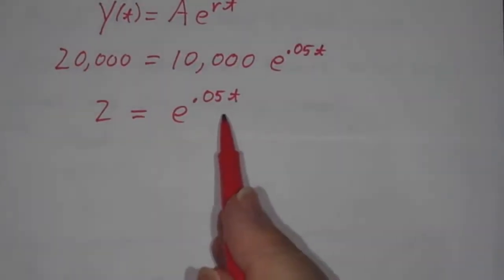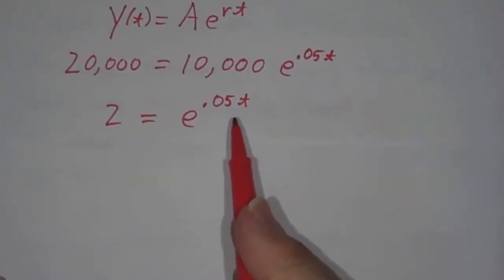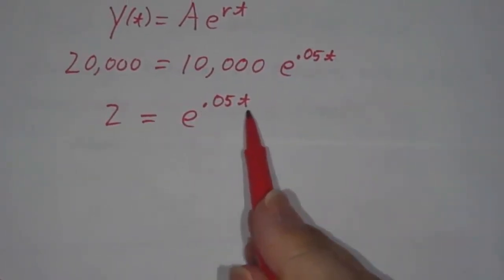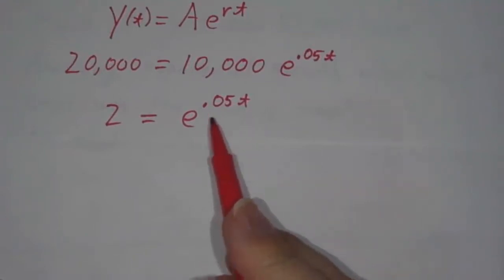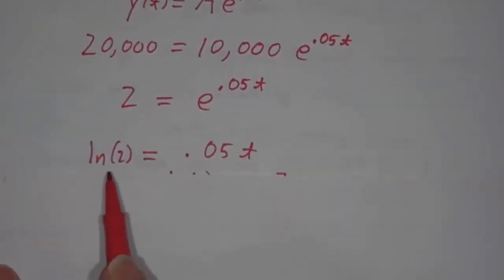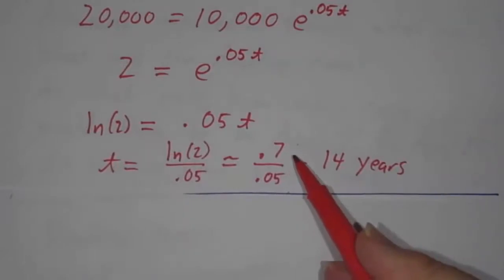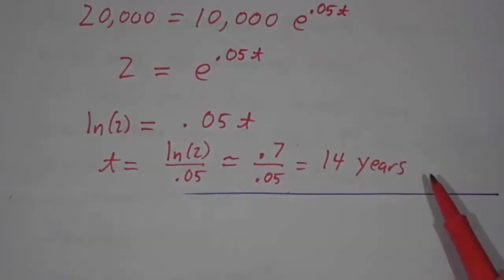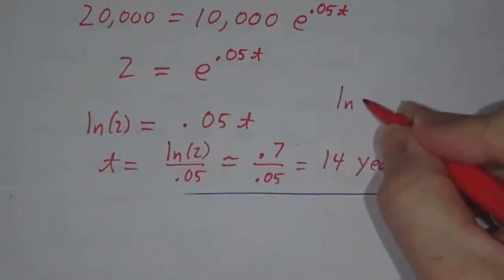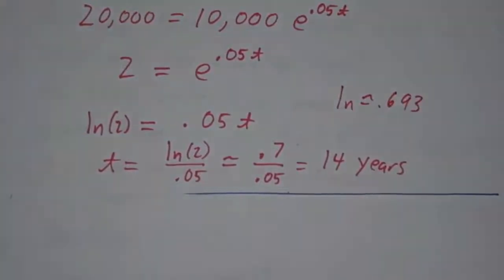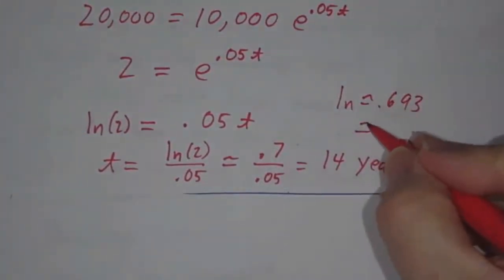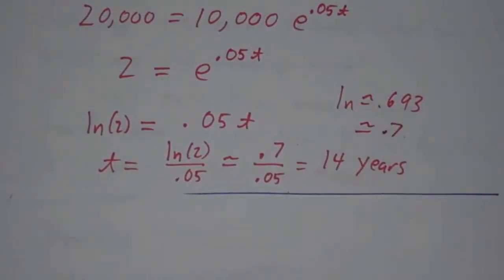Well, now if you know e to the rt, how do you figure out rt? Well, this is exactly what logs are for. The natural log of e to the 0.05t is 0.05t. So the natural log of 2 must be 0.05t. And so t is the natural log of 2 divided by 0.05. Now the natural log of 2 happens to be pretty close to 0.7. And 0.7 divided by 0.05 is 14 years. Now that isn't exact. The natural log of 2 is really about 0.693. But for most purposes, approximating that to 0.7 is a really good approximation.